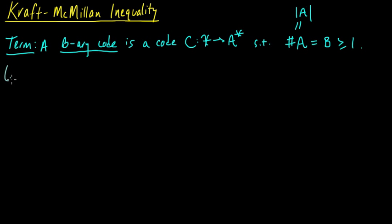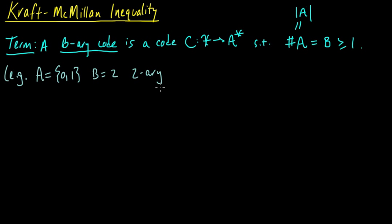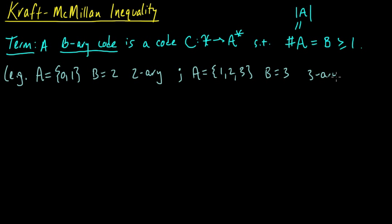Just a brief couple of examples to make this completely clear. If our code alphabet is {0, 1} — binary sequences — then b is 2, and we would call it a two-ary code, or usually just a binary code. Another example: if A is {1, 2, 3}, then b would be 3 and we would have a three-ary code, or more commonly a ternary code. More generally, for an arbitrary integer we say b-ary.